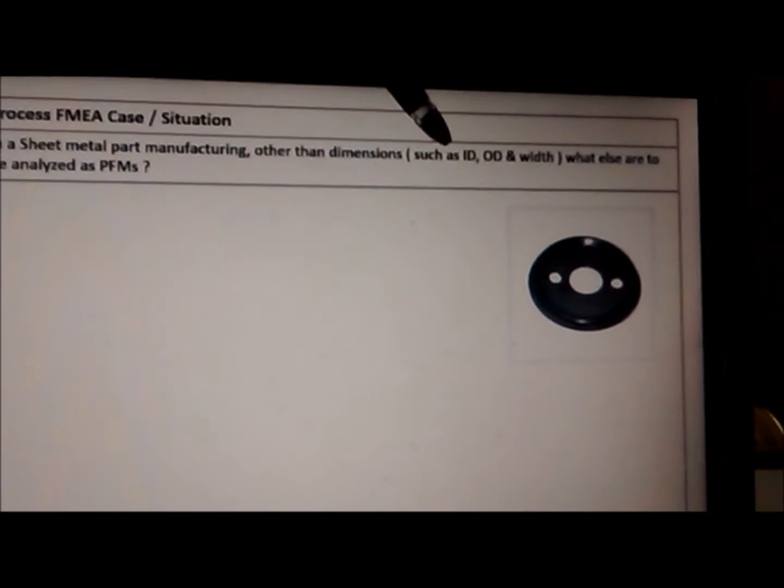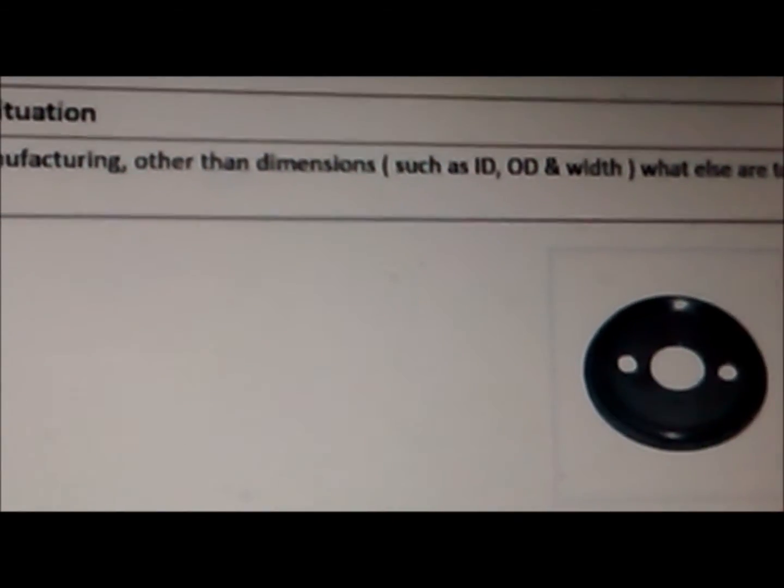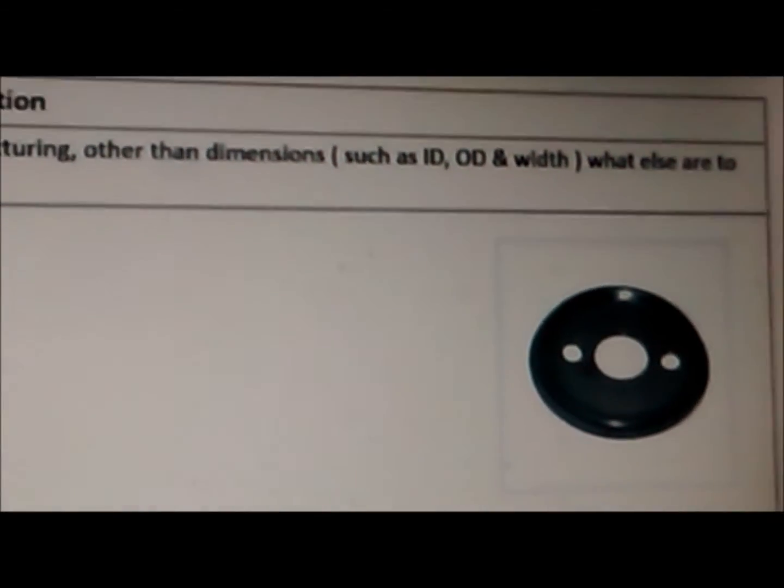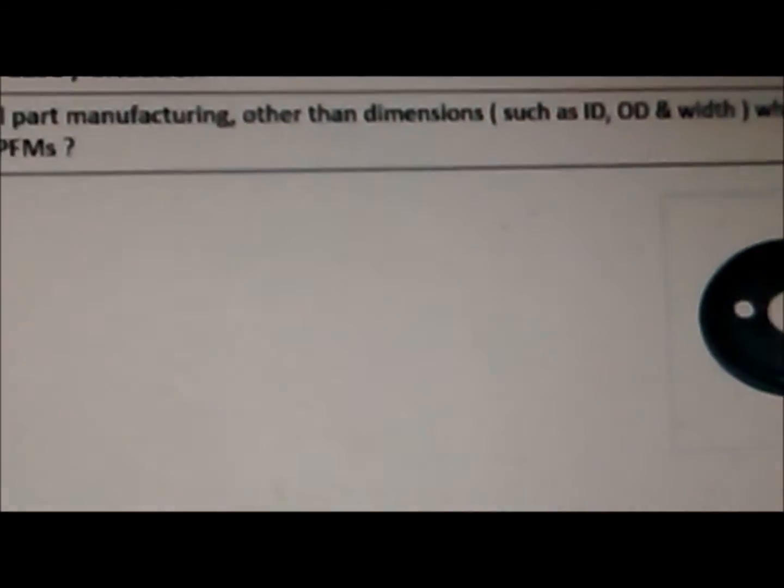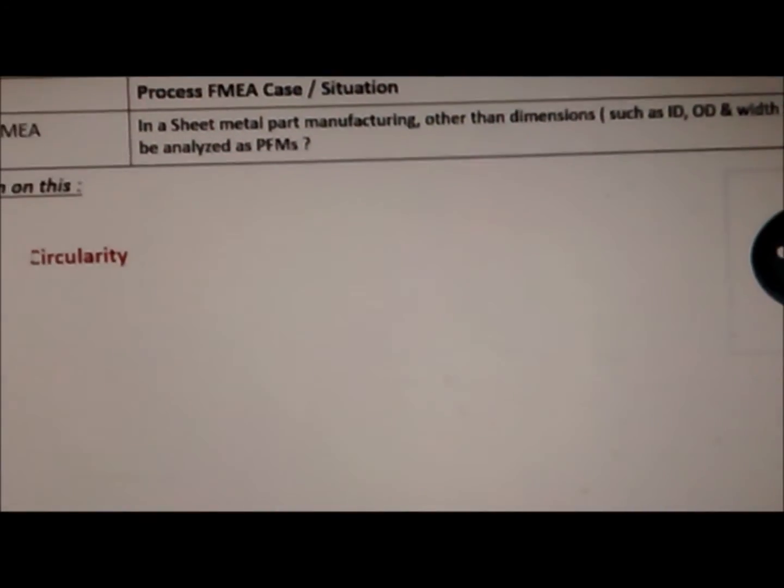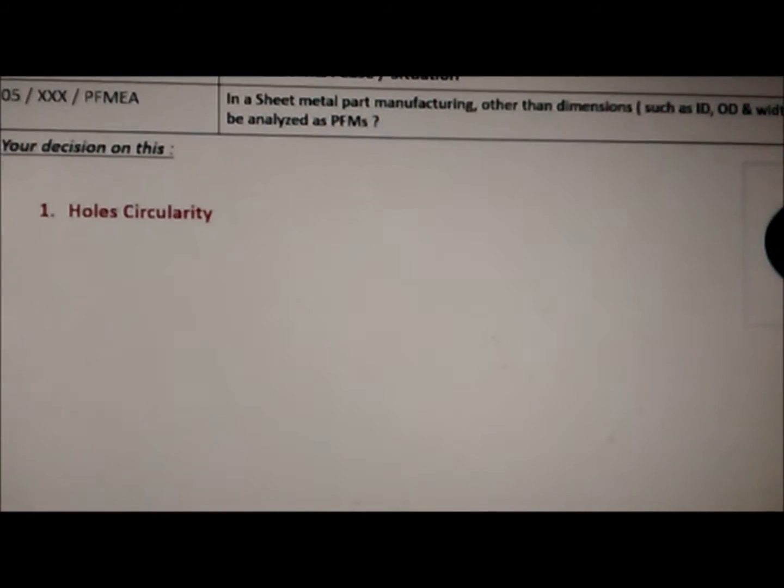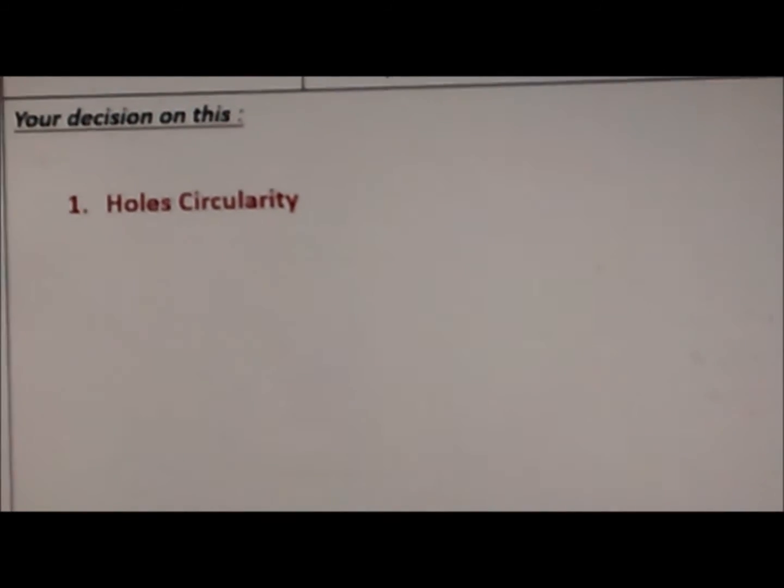Other than ID, OD, and width, what are all the other possible failure modes? We could say hole circularity. Circularity, as we know, is a geometrical dimension which is not generally considered in FMEAs.